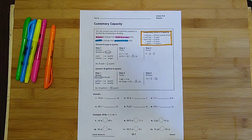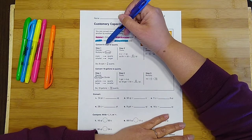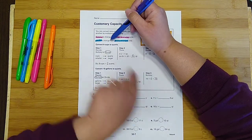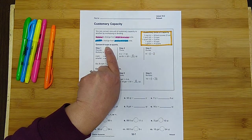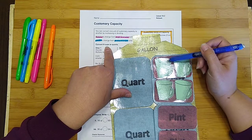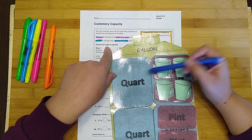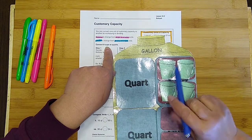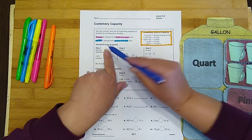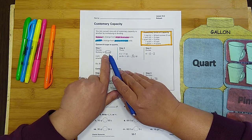So in the example it says convert 8 cups to quarts. So since we're going from cups to quarts, and we can glance at this thing if we don't remember. There's cups and there's a quart. So a cup is definitely smaller than a quart. So we're going smaller to larger, which means we want to divide. So they circled the word divide.